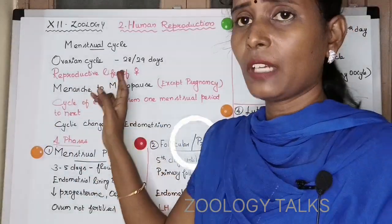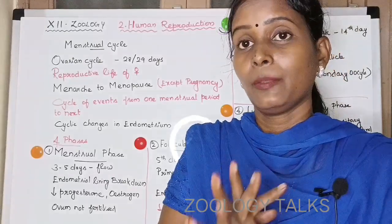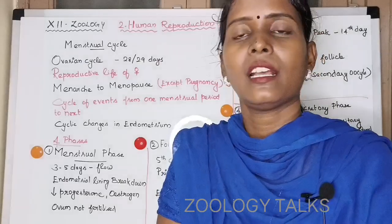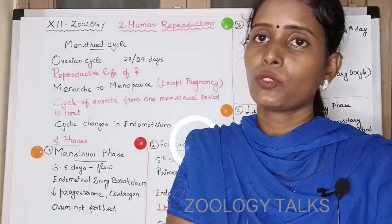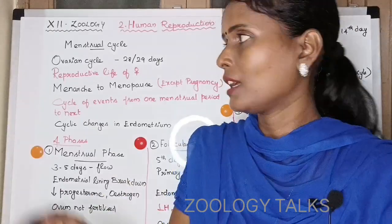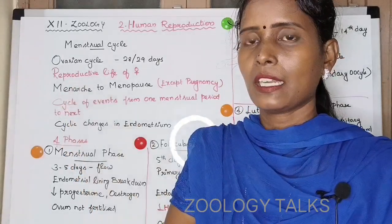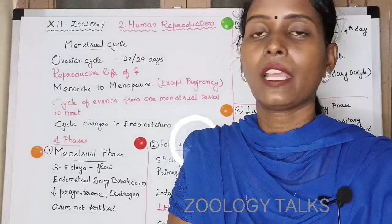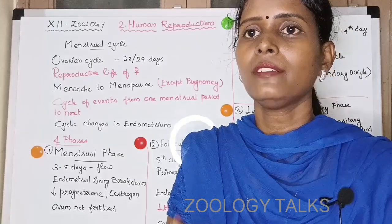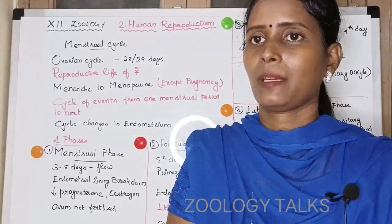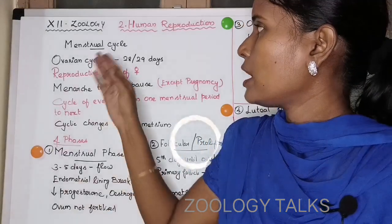What is the reproductive life of a female? The reproductive function begins and later ceases. The reproductive life of a female is from menarche to menopause. Menarche is puberty — when a female child reaches reproductive maturity. The cycle of events from one menstrual period to the next is called the menstrual cycle.